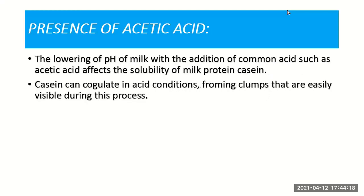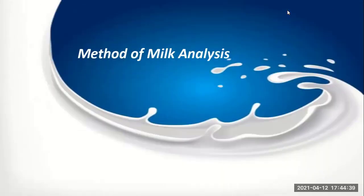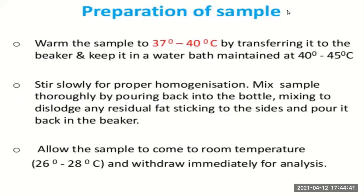Then the presence of acetic acid in milk: lowering the pH of milk by adding a common acid such as acetic acid affects the solubility of the milk protein casein. Casein can coagulate under acidic conditions, forming clumps that are easily visible during this process.